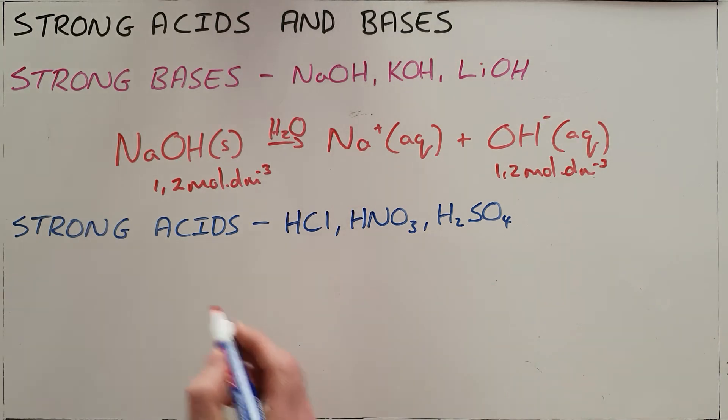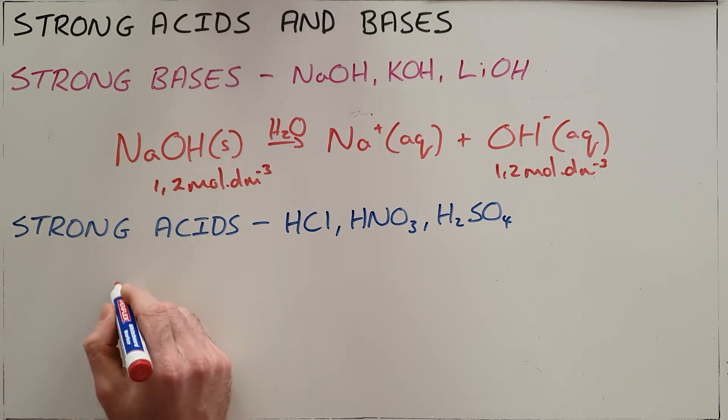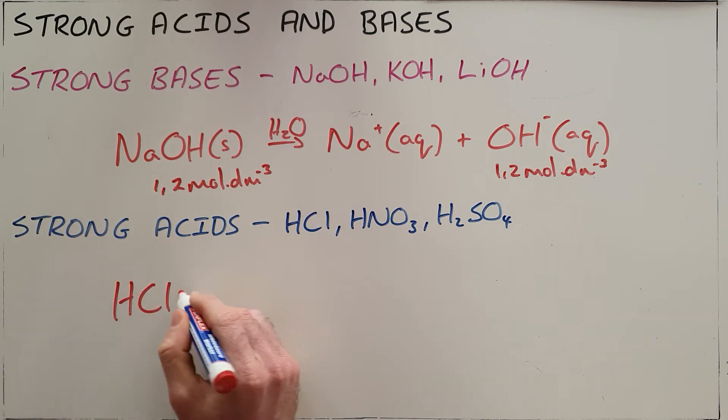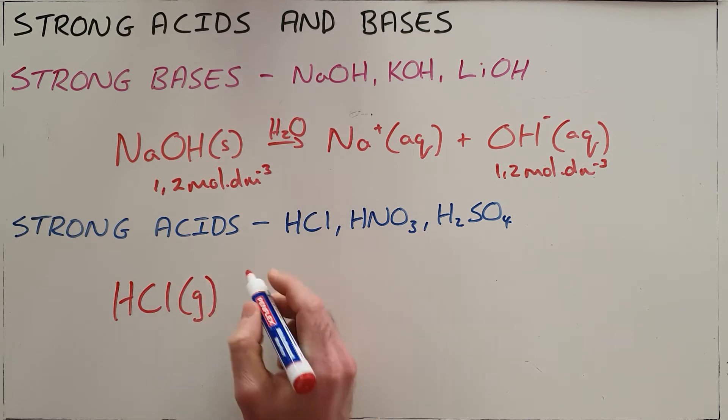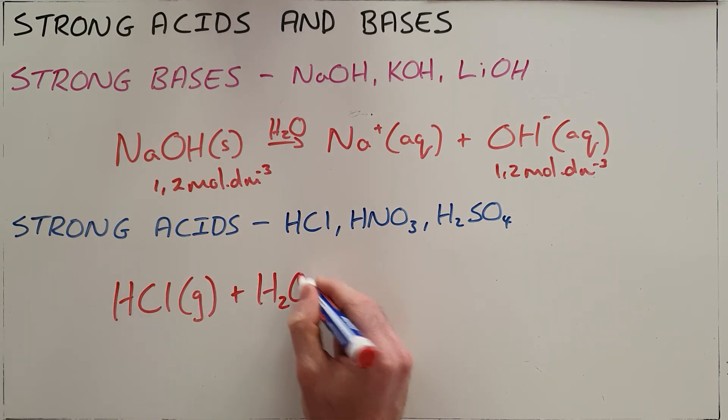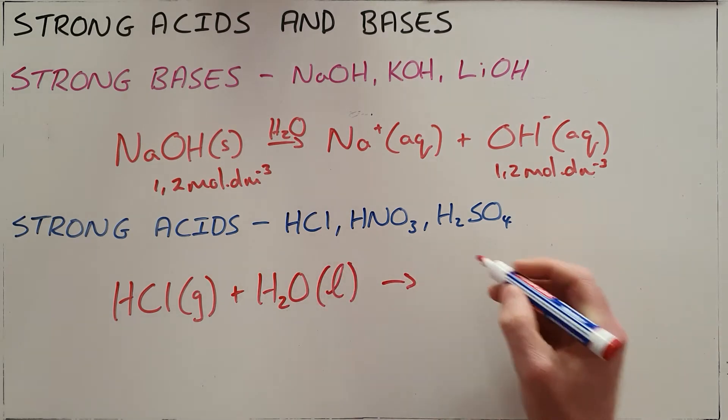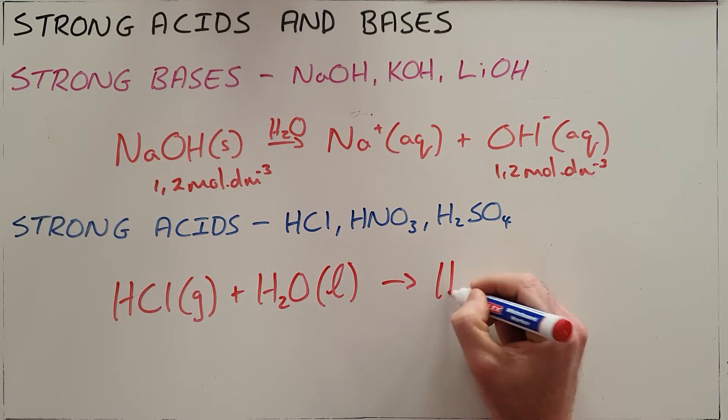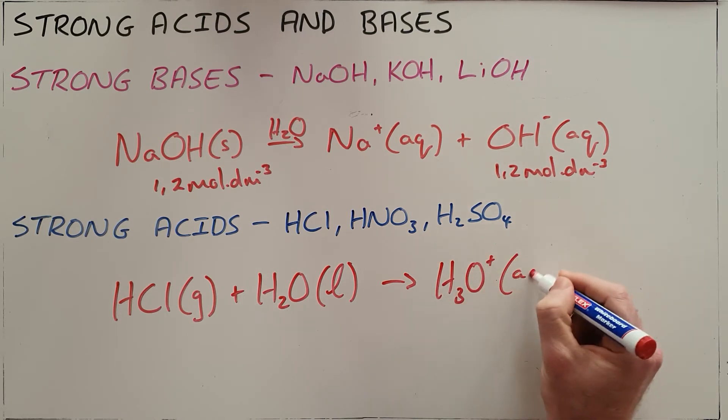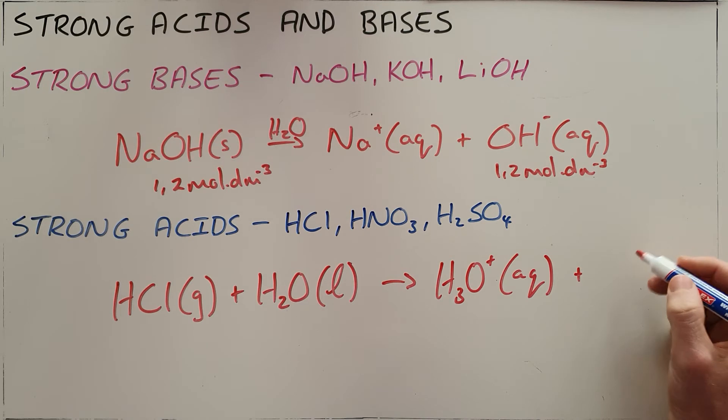In the same way strong acids also dissociate completely, so we would say when we place gaseous hydrochloric acid in water, we know that acids ionise in water and that basically means that they first dissociate and then react with the water to form an aqueous solution of hydronium ions and chlorine ions also aqueous.